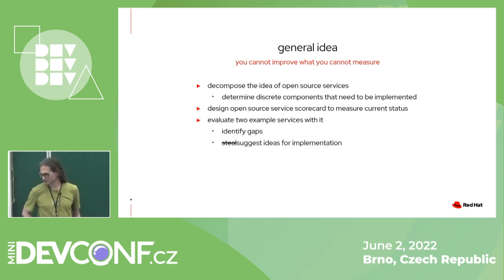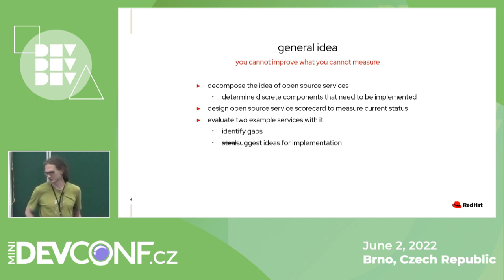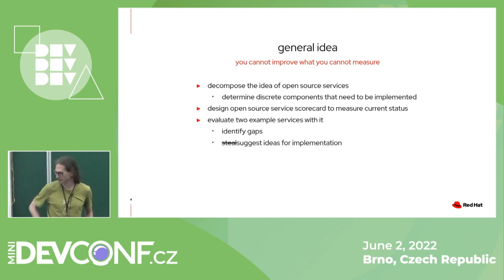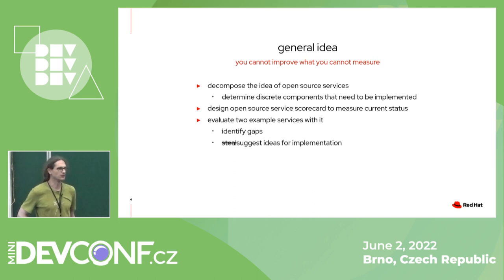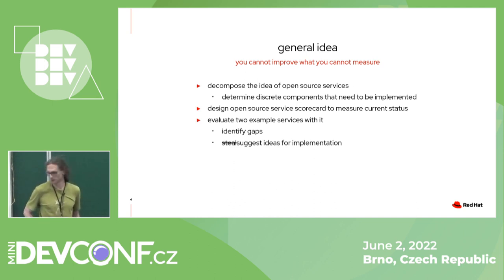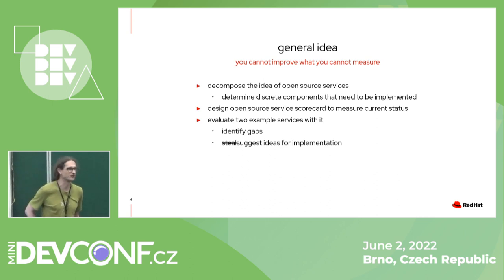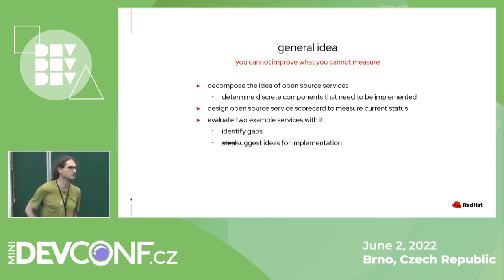We tried to come up with a scorecard — how open source is your service? Kind of like a card game where you can say my service is more open source than yours. It should allow us to identify gaps — which pieces are not there where they should be. Applying this scorecard to different services might allow us to pick ideas from other projects, because they're all open source — so if somebody solves one of those aspects in a better way, it might be something we should adopt.